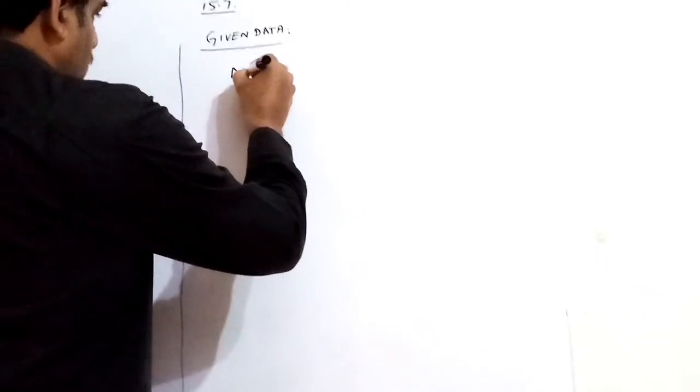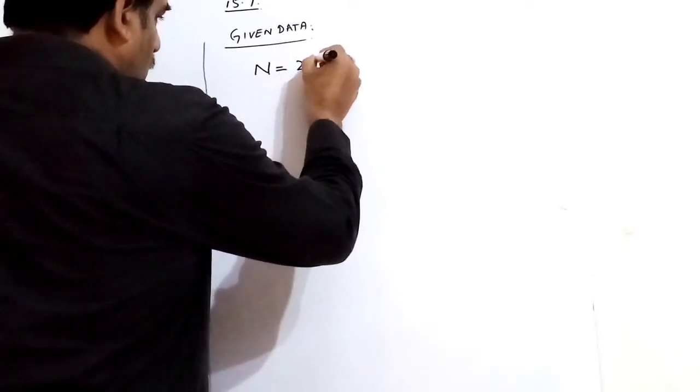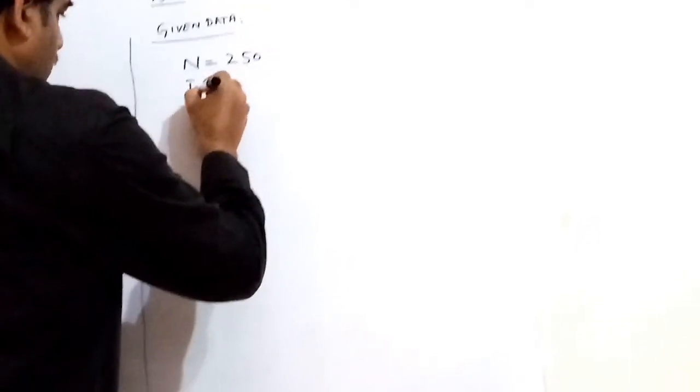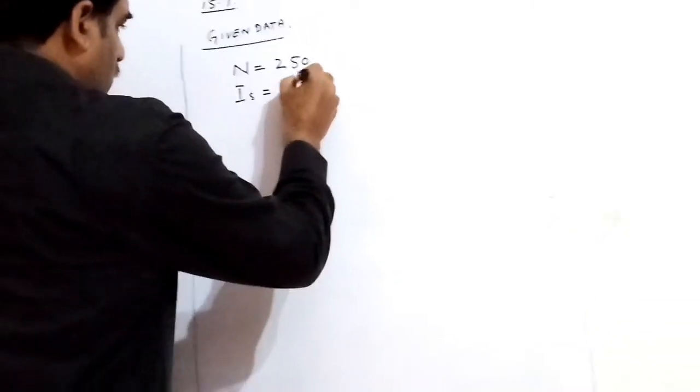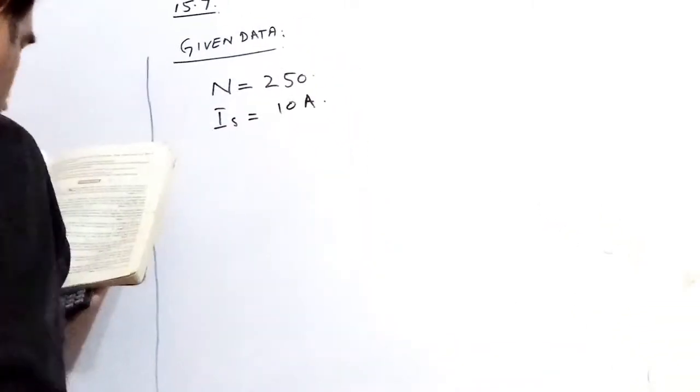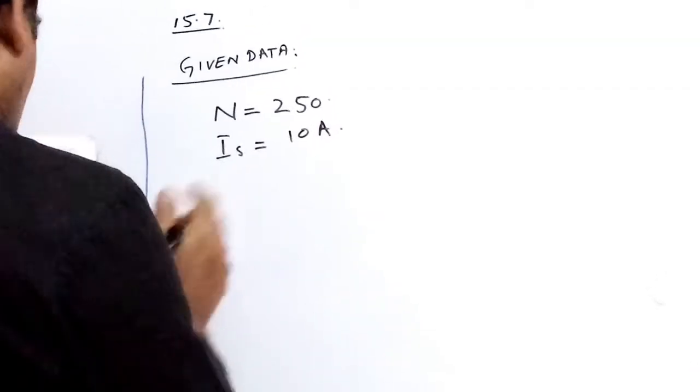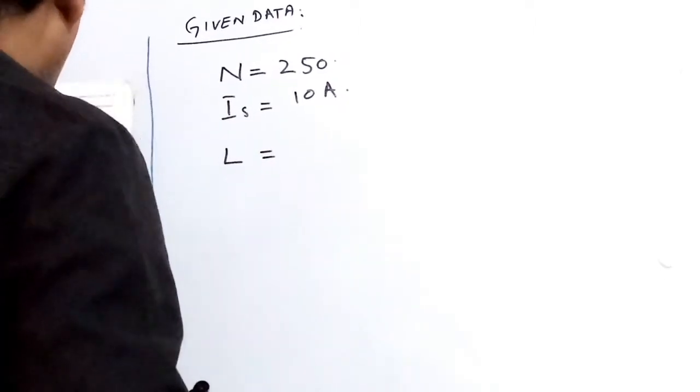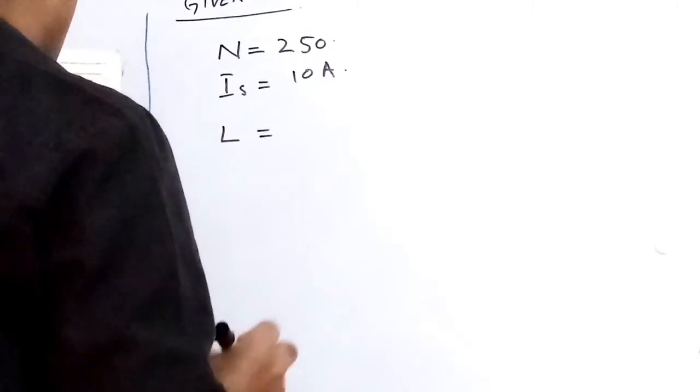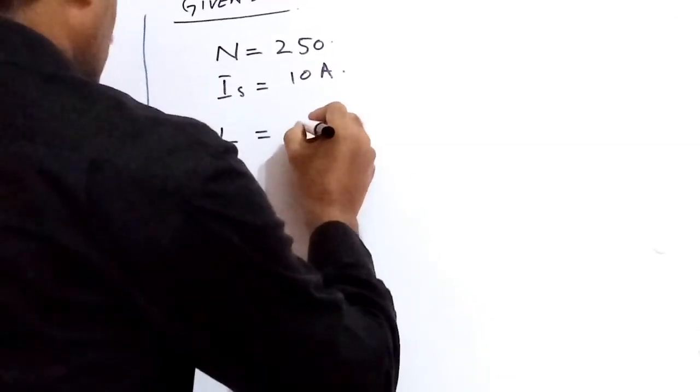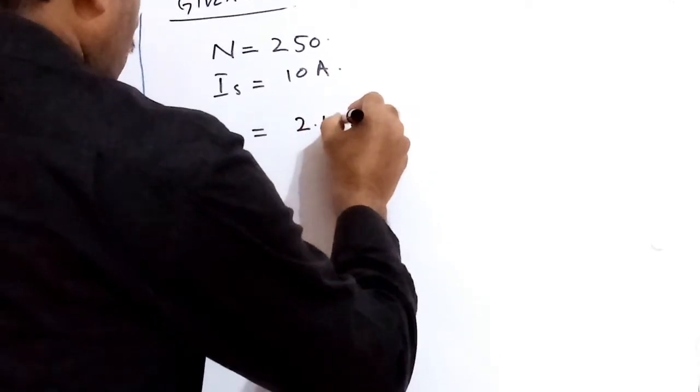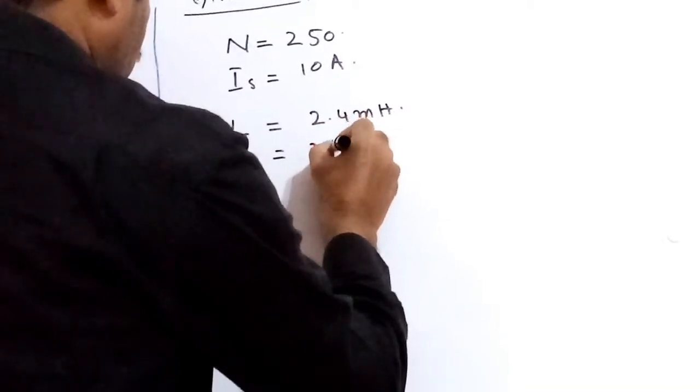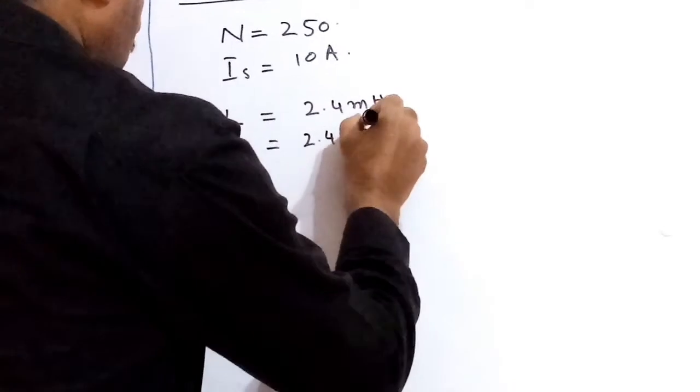number of turns N equals 250. Is equals 10 Ampere. L, self-inductance, equals 2.4 mH, which we can write as 2.4 times 10 to the power minus 3 Henry.